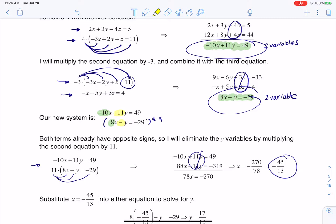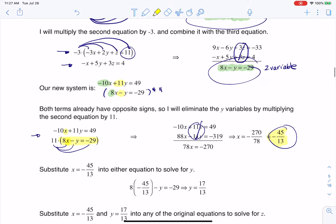So now it's time to back substitute. I'm going to take that negative 45 thirteenths, and I'm going to put it in here. You could also have opted to put it into this equation. I'm just choosing this second equation only because the numbers are nicer. So I sub that in, solve for y, and y is also a delightful fraction.